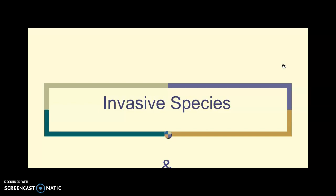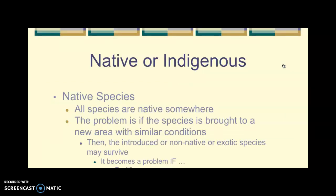It used to be that transportation was much slower, so the number two cause of loss of biodiversity is invasive species. So what is an invasive species? In your notes it talks about native species or endemic species — change 'endemic' to 'indigenous' — so native or indigenous, and you see this here on the screen.